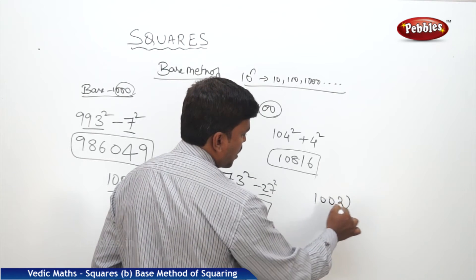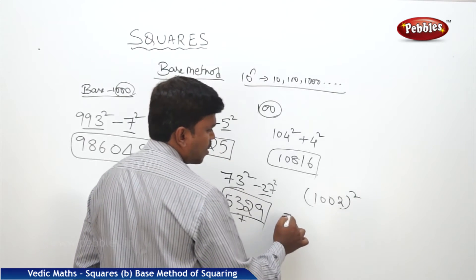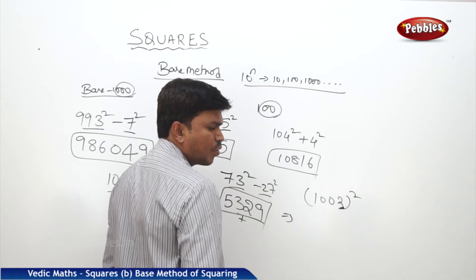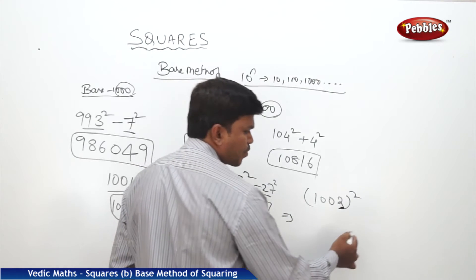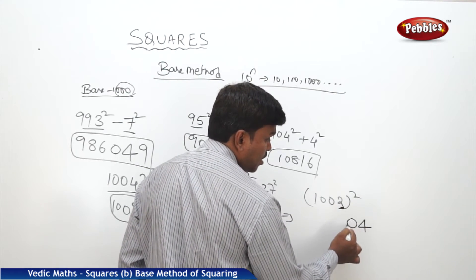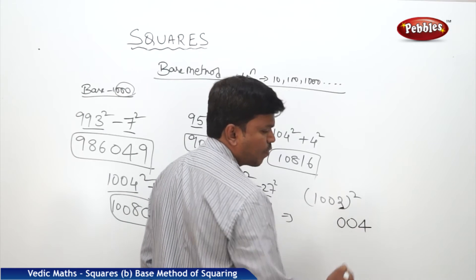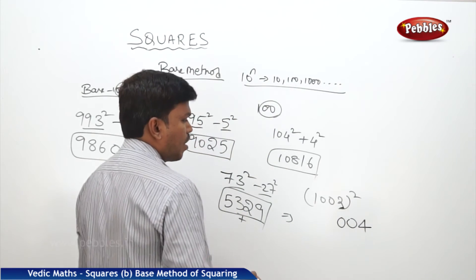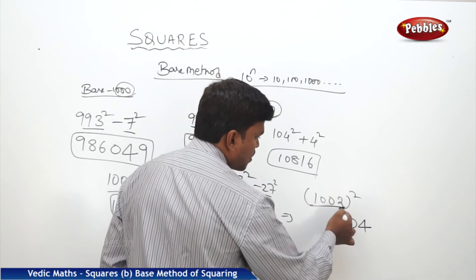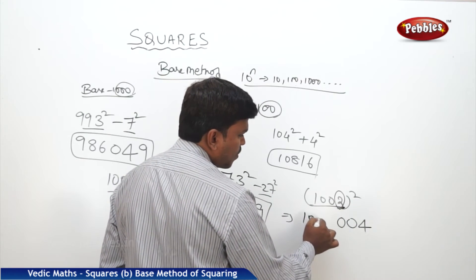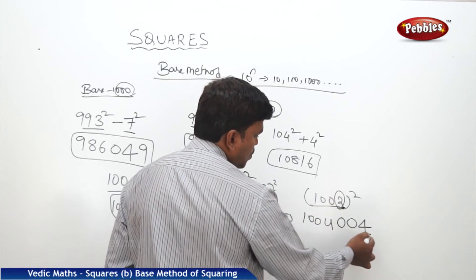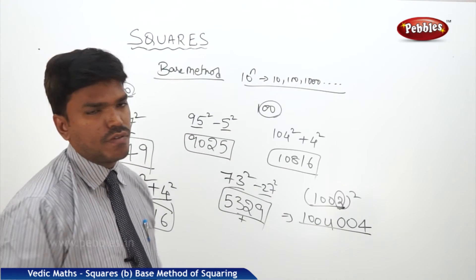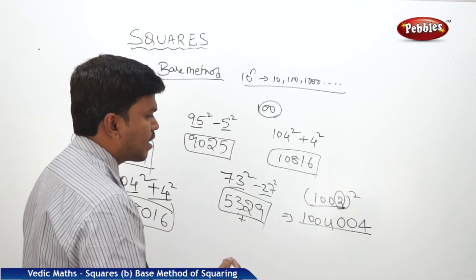I need 1002 squared. It is 2 more than the base 1000. What is 2 squared? 4 — but we write it as 004, adding two zeros to make 3 digits. Now 1002 plus 2 is 1004. So your answer is 1004004.